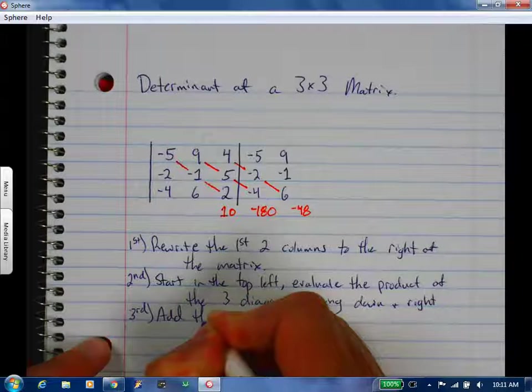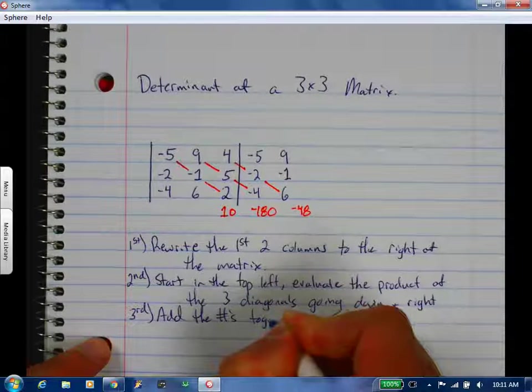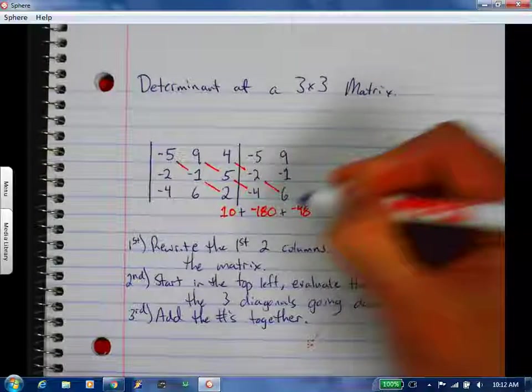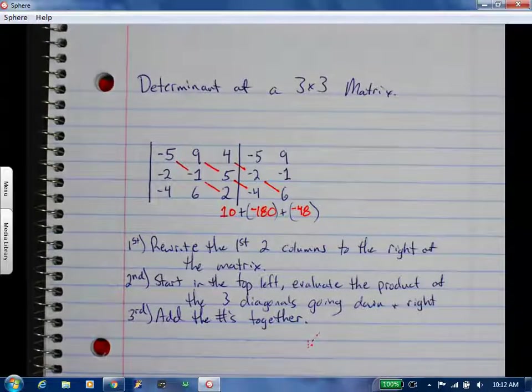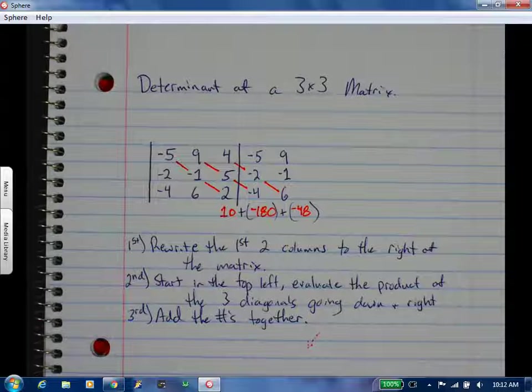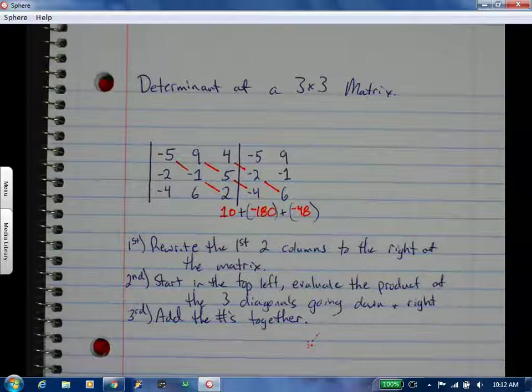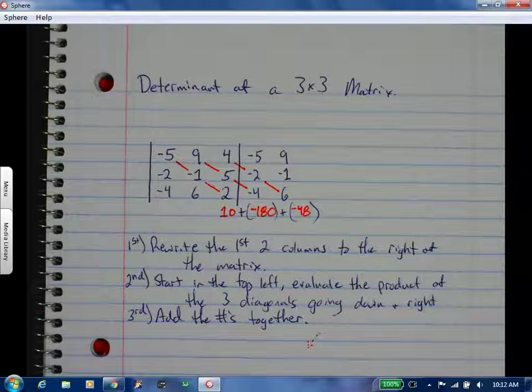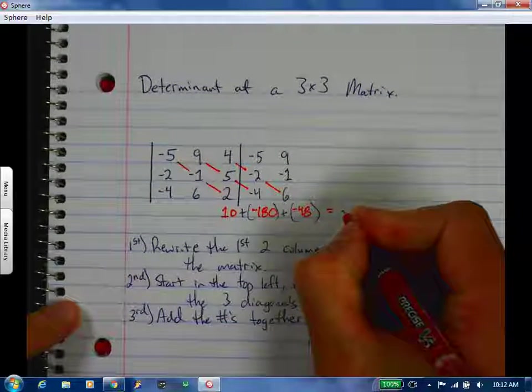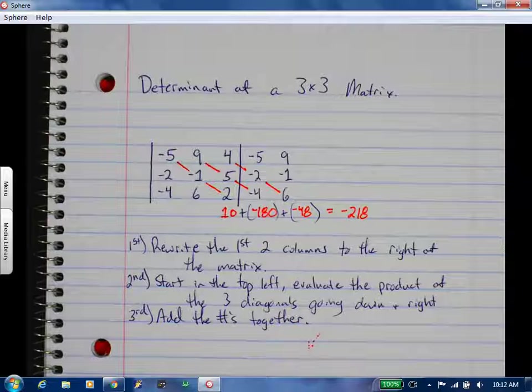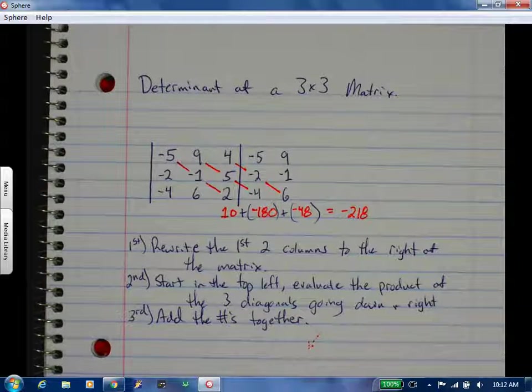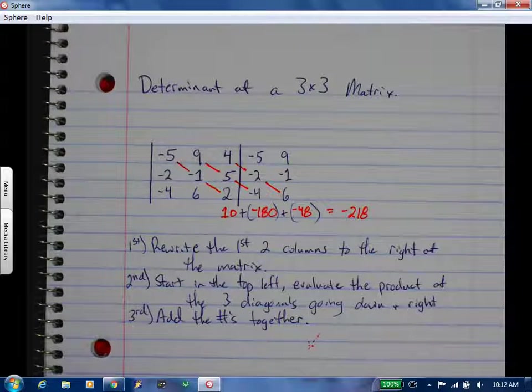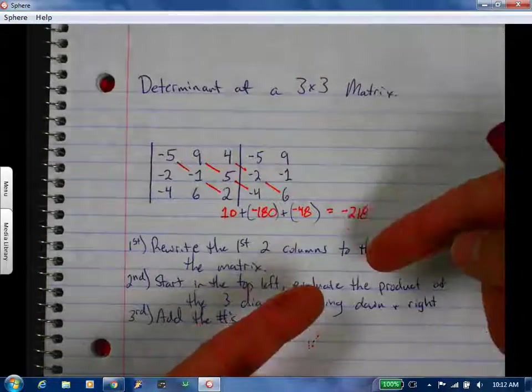Add the numbers together. So 10 plus negative 180 plus negative 48, that'd be negative 218. So it's still kind of the diagonals, just on steroids. Yeah, that's not all. Because this is only one direction of diagonals, now we have to go the other direction.